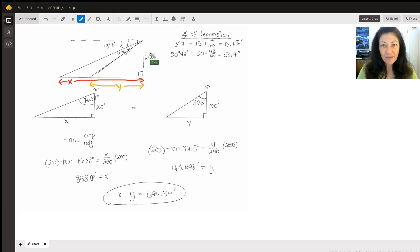You're going to do the exact same thing for the 50 degrees 42 minutes. You're going to put 42 over 60, you're going to get the decimal 0.7, add that back to the 50 to get your degrees in decimals. Again, these are the angles of depression.